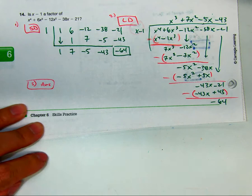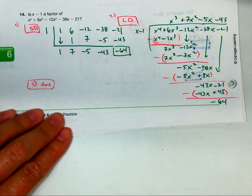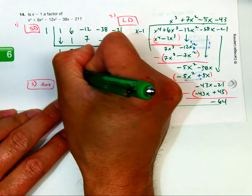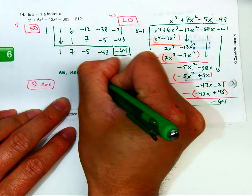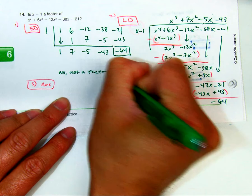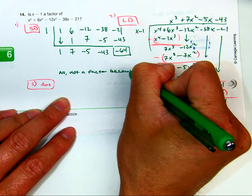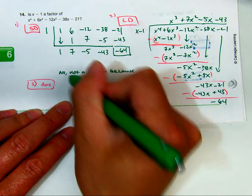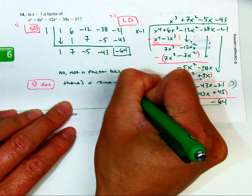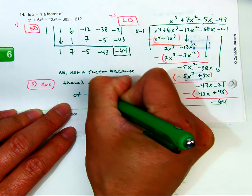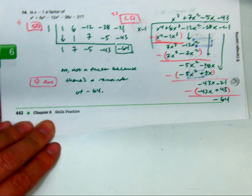All right, Joe, finish this up. Is this a factor? No. No what? Because what? That would be sufficient.